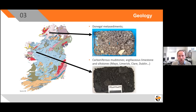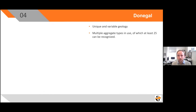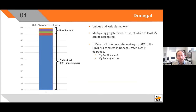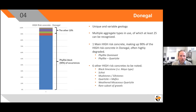I'm going to focus the next part of the talk on County Donegal. Donegal is unique with respect to the Republic of Ireland — it has unique geology, and there are multiple aggregate types in use that we've seen; we can detect at least 25, and they're in regular use. Of these, there's one main high-risk concrete: this is the subject of the paper by Lehman et al., the phyllite-dominant aggregate. There is a subtype — the phyllite quartzite — that we can also detect and separately characterise, but it's considered to belong to the same essential aggregate and represents simple geological variability within the aggregate source or quarry source. On top of this, there are six other high-risk concrete types to note.